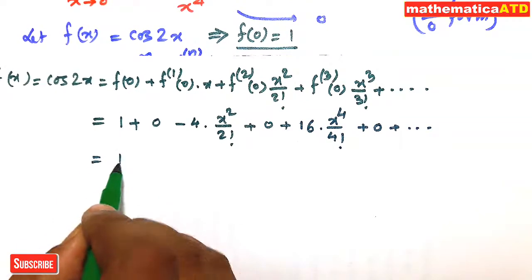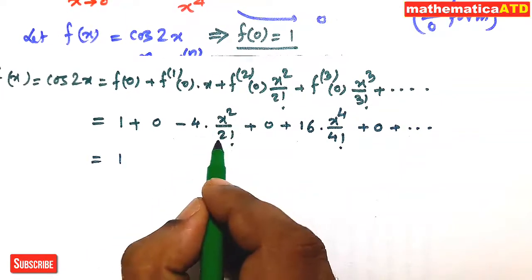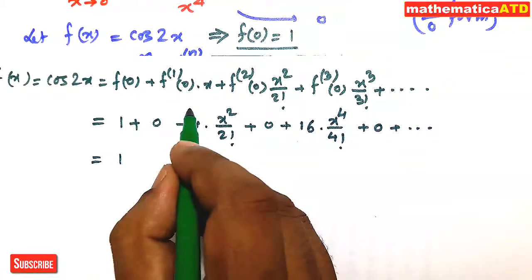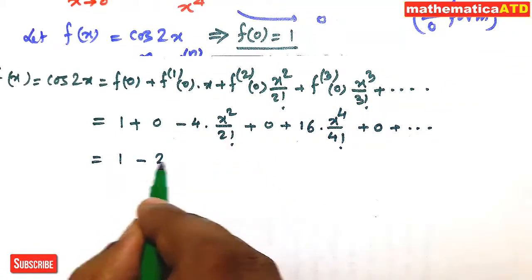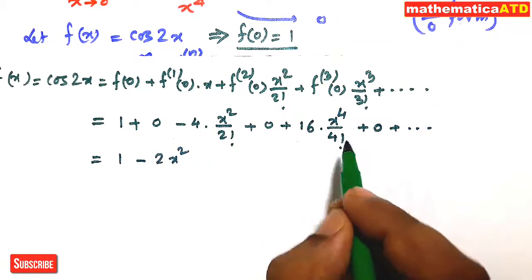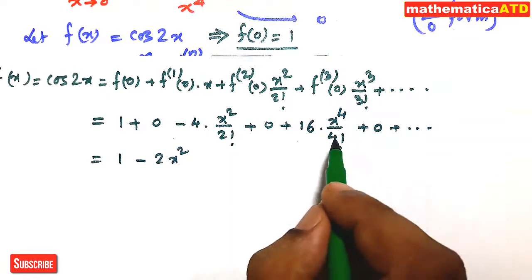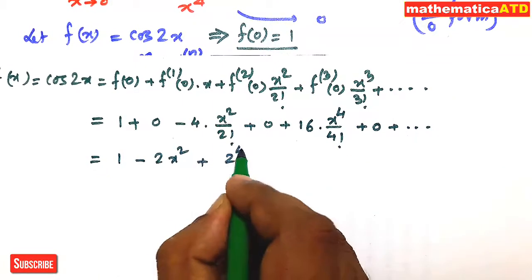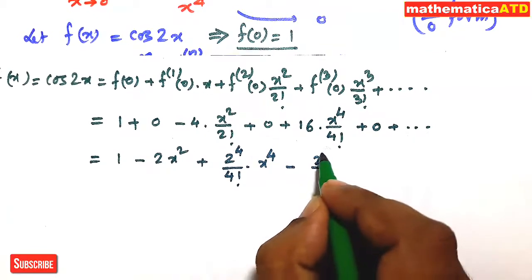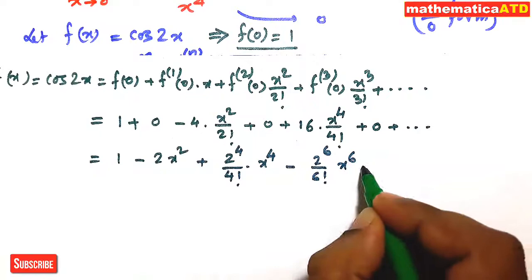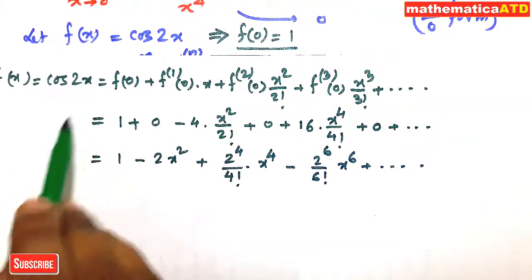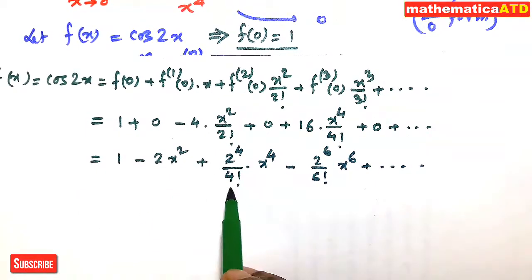After simplification: −4/2! = −4/2 = −2, so we get 1 − 2x². Then 16·x⁴/4! can be written as 2⁴/4! · x⁴. The next term is 2⁶/6! · x⁶, and so on. So the Taylor series for cos(2x) is: 1 − 2x² + (2⁴/4!)x⁴ − (2⁶/6!)x⁶ + ···